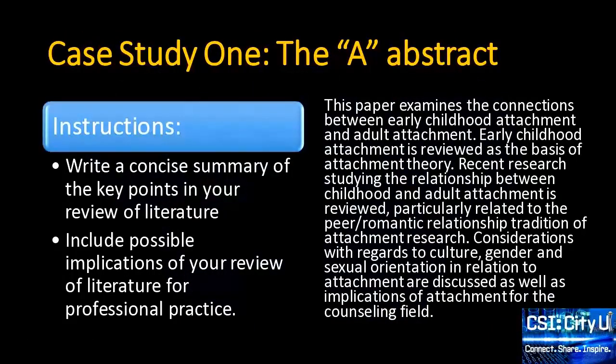In our program, one of the common errors is that students mistakenly believe that an abstract serves as an introduction to their paper rather than as a summary of their paper. The student's instructions for writing the abstract are to: number one, write a concise summary of the key points in the review of literature, and number two, include possible implications of your review of literature for professional practice.